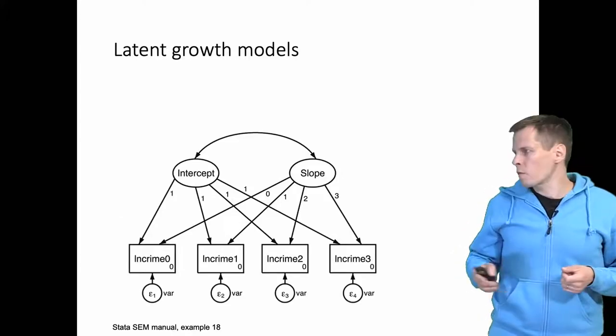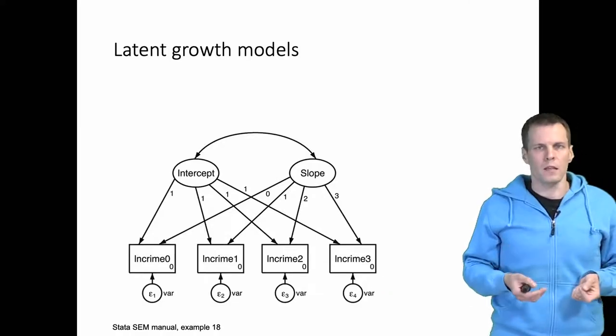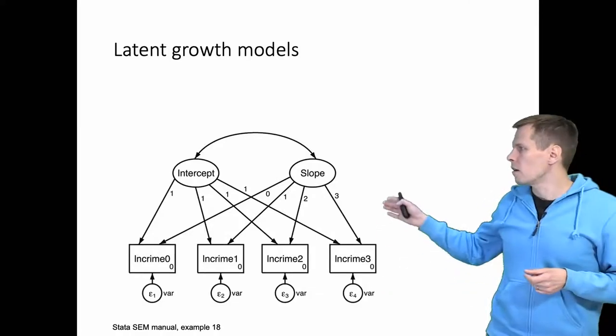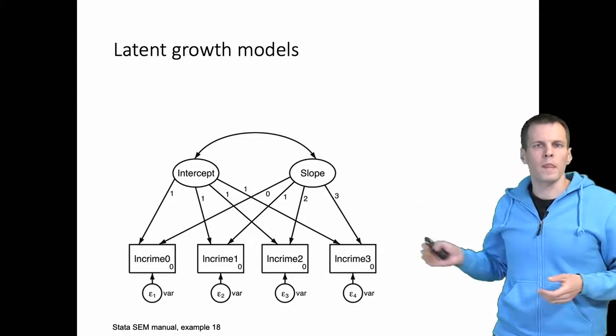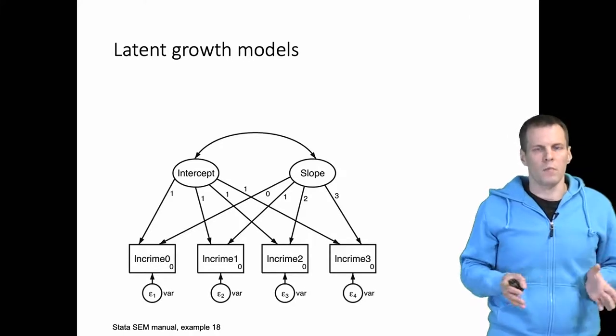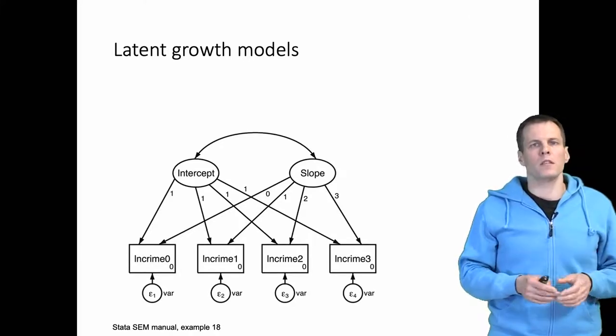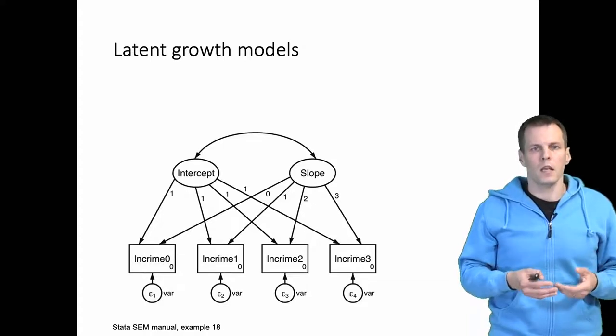Our example comes from the Stata user manual, the SEM manual example 6.18, and the model is estimated from data from different cities where we have crime rates over time. The research question is how does the crime rate of these different cities evolve over time.